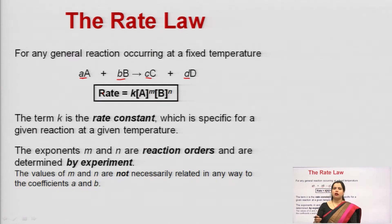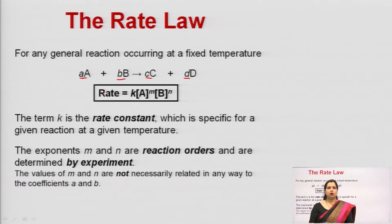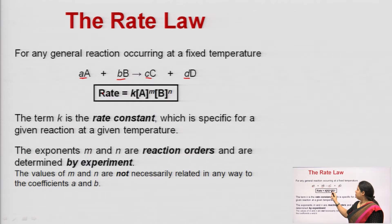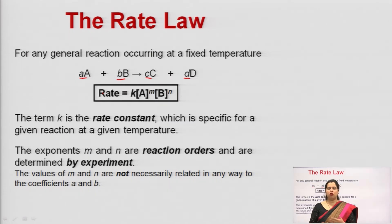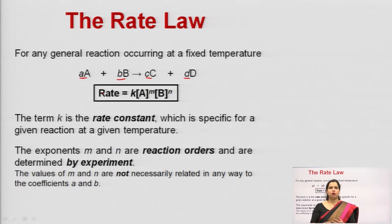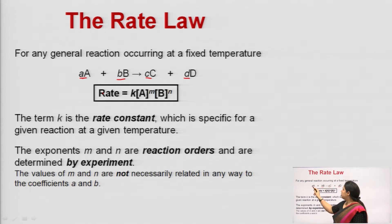The exponents M and N can be represented as: rate equals k times [A]^M times [B]^N, where k is the rate constant. These exponents M and N are the reaction orders. Generally, the number of reactants participating in a reaction gives zero order, first order, and second order respectively. These exponents M and N are determined by experiments, and their values are not necessarily related in any way to the stoichiometric coefficients A and B — they do not have any direct relationship.